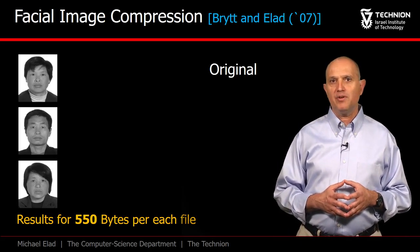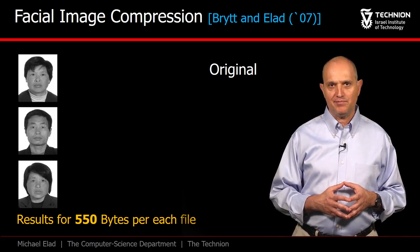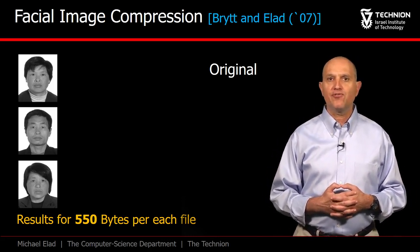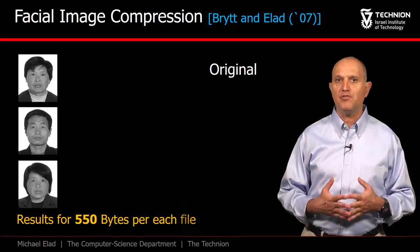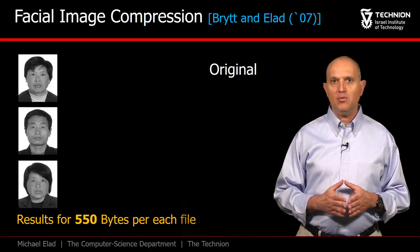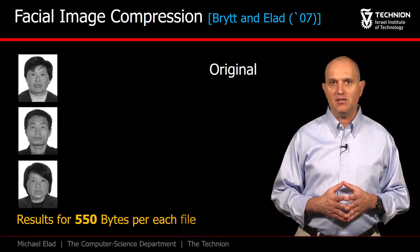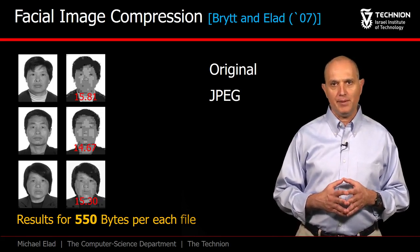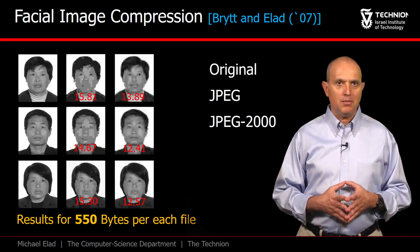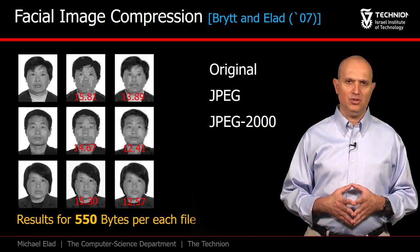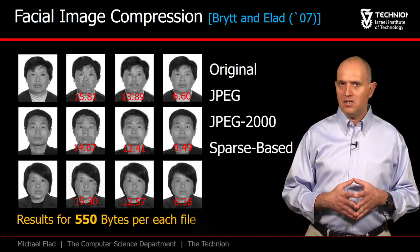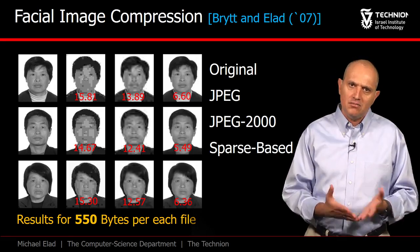We move to a very different problem of image compression, done with Ori Brit. Our goal in this project is to deeply compress frontal facial images while preserving their content. Let's see what regular JPEG provides for a budget of 550 bytes — the values shown in red are the root mean squared error per pixel. JPEG 2000 performs better, but the faces are still quite distorted. And here is what Sparsland with learned dictionaries could provide — clearly these results are far better and in fact near perfect.